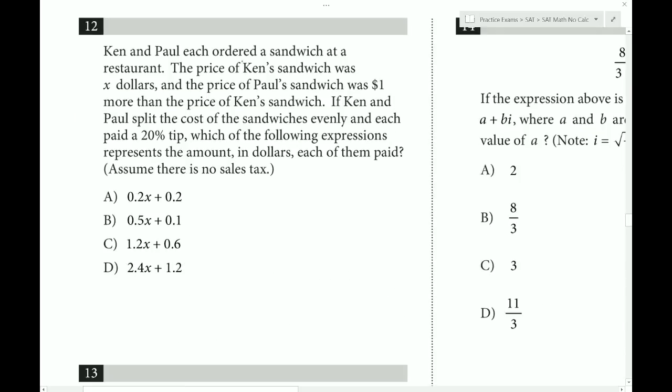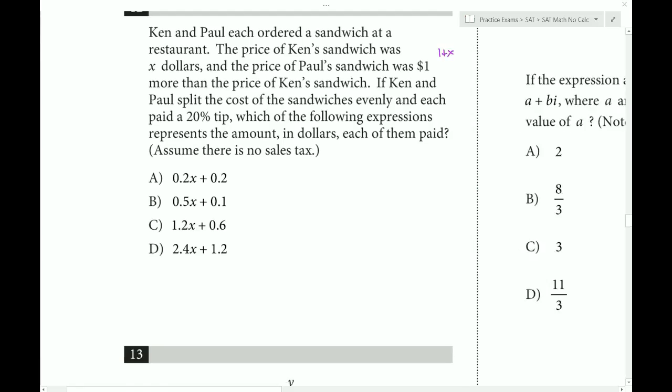Ken and Paul each ordered a sandwich at a restaurant. The price of Ken's sandwich was x dollars. The price of Paul's sandwich was one more than Ken. So that would be 1 plus x. If Ken and Paul split the cost of the sandwiches evenly. So the total cost would be 2x plus 1. And they're splitting it evenly. So each they would pay divided by 2.